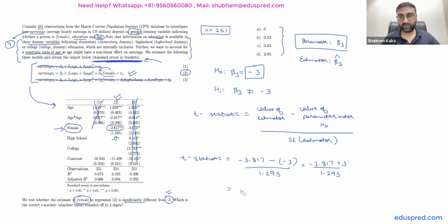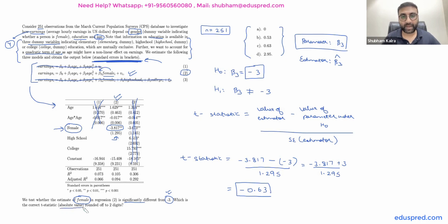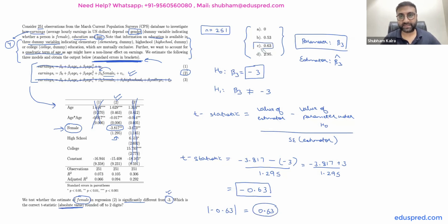Solving this: minus 3.817 plus three divided by 1.295 equals minus 0.63. If you look at the options, there is no negative option because the question asks for the absolute value. The absolute value of minus 0.63 is 0.63. So the absolute value of the t-test statistic is 0.63, which means the correct answer is option C.